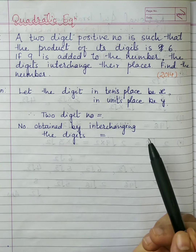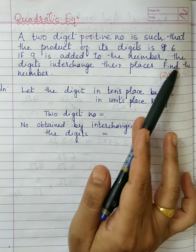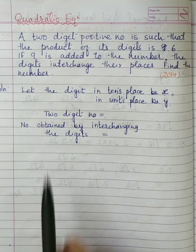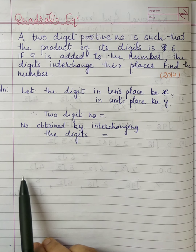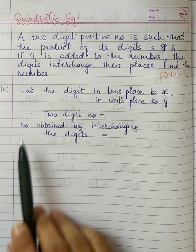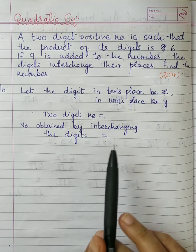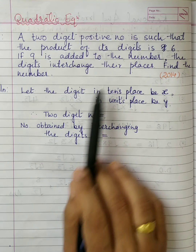Now the next question: a two-digit positive number is such that the product of its digits is 6. If 9 is added to the number, the digits interchange their places. Find the number. When you read this, you understand we are talking about a two-digit positive number with two conditions given.